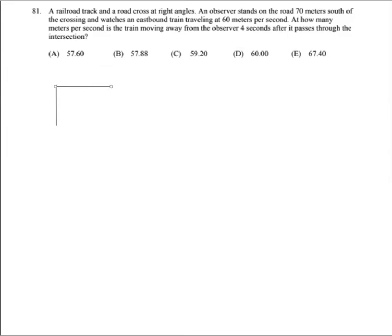So we have our observer in the y direction, south 70 meters away from the intersection. So we're going to say y equals 70.